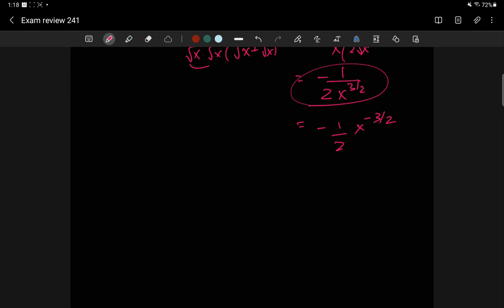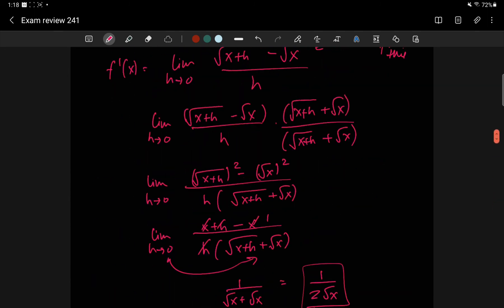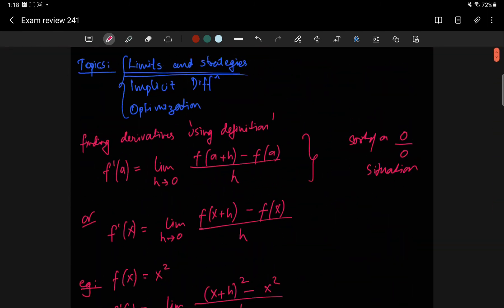I kind of don't want to do a whole really long video. So I'm going to stop this video here just as we finished covering limits and strategies. Then in the next one, I'll do implicit differentiation. I'll pick some examples from the worksheet and then followed by optimization part. That's it for this video.